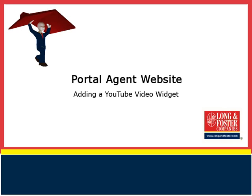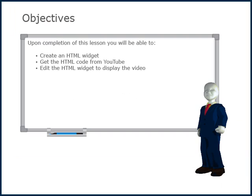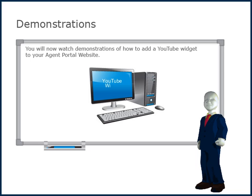Welcome to this video on the Agent Portal website. This video will provide details on how to add a YouTube video to your Agent Portal website. Upon completion of this lesson, you will be able to create an HTML widget, get the HTML code from YouTube, and edit the HTML widget to display the video. You will now watch demonstrations of how to add a YouTube widget to your Agent Portal website.